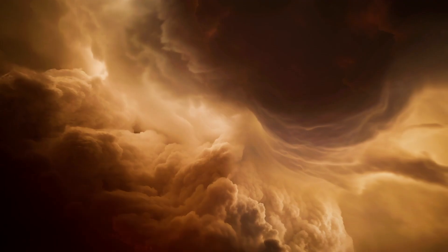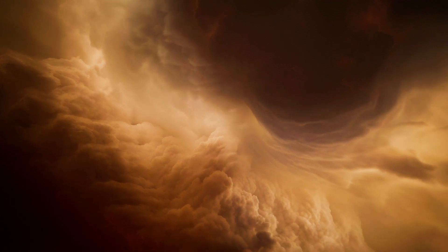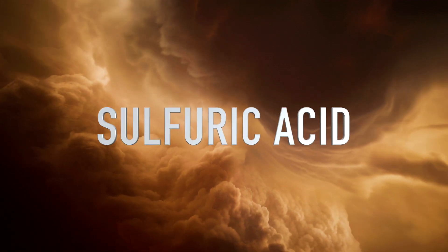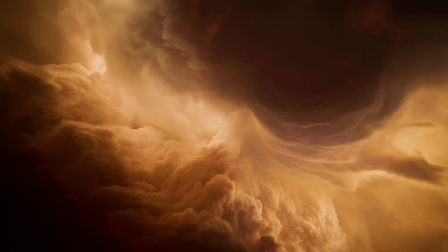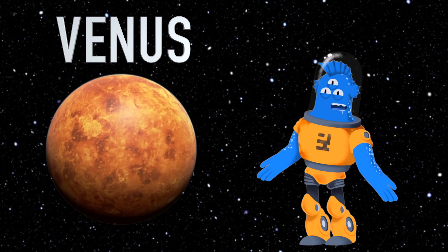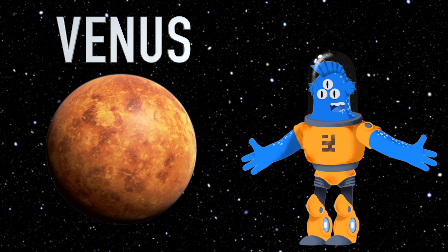Venus is incredibly hot, hot enough to melt lead. Venus has thick swirling clouds made of sulfuric acid that trap heat, making it the hottest planet in our solar system. These clouds are so thick that we can't even see the surface from space.